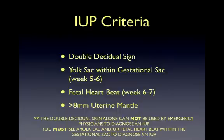When an IUP cannot be confirmed via transabdominal ultrasound, a transvaginal ultrasound is in order. The following slides will illustrate each of the IUP criteria: the double decidual sign, yolk sac, fetal heartbeat, and uterine mantle over 8 mm. The yolk sac and fetal heartbeat are most important to recognize.